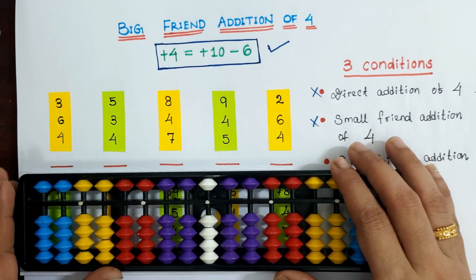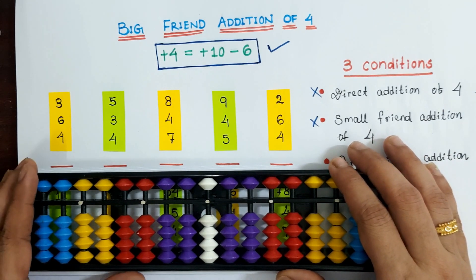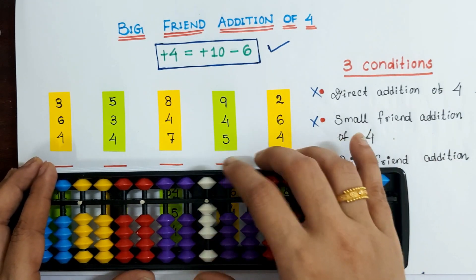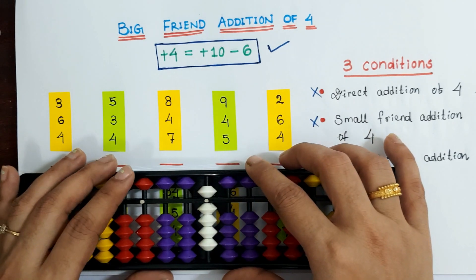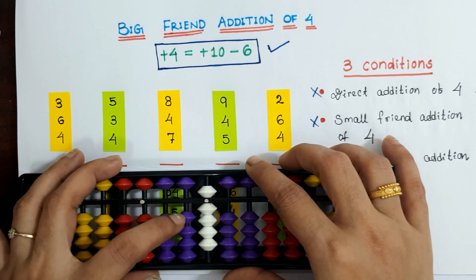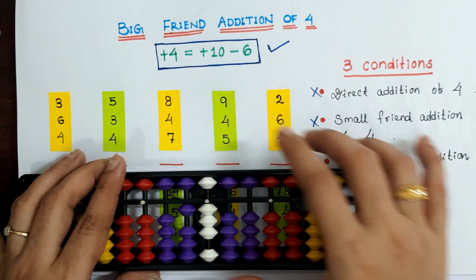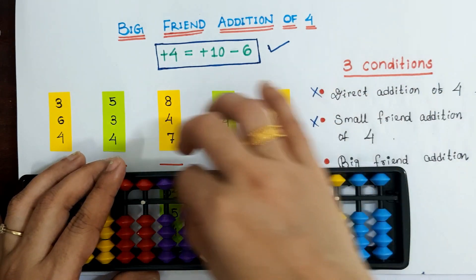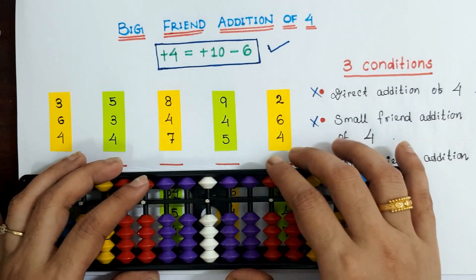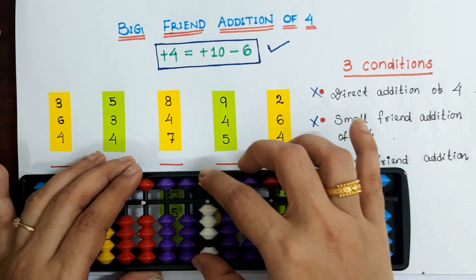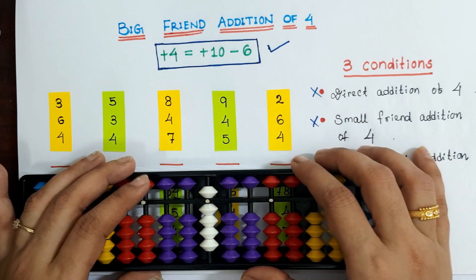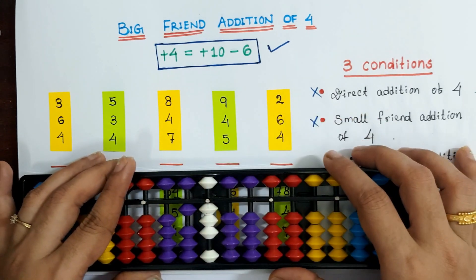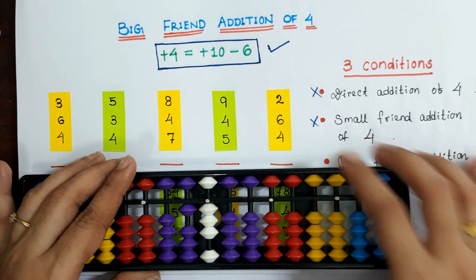The first example: 3 plus 6 plus 4. Using the formula, plus 4 is plus 10 minus 6. Answer is 13.